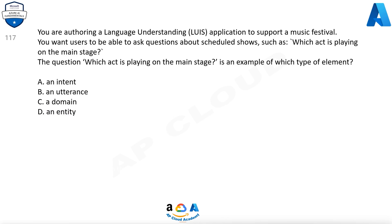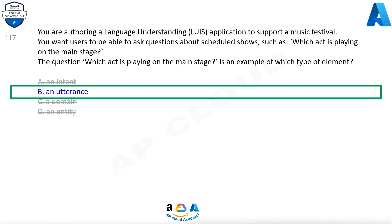Question 117. You are authoring a Language Understanding (LUIS) application to support a music festival. You want users to be able to ask questions about scheduled shows, such as, which act is playing on the main stage? The question 'which act is playing on the main stage?' is an example of which type of element? A. An intent. B. An utterance. C. A domain. D. An entity. Correct answer: B. Utterances are input from the user that your app needs to interpret.